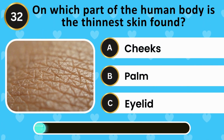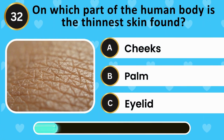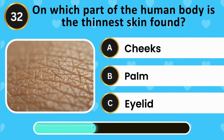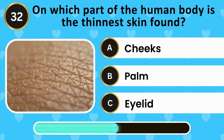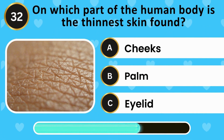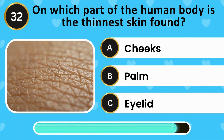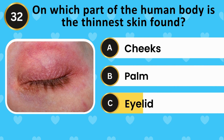On which part of the human body is the thinnest skin found? Cheeks, palm, eyelid. The answer is eyelid.